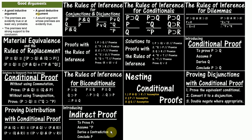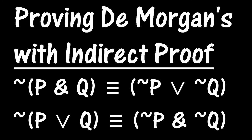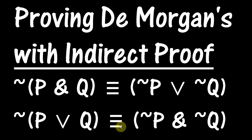And so we used indirect proof to prove a few more rules of replacement. Now we're at the last rule of replacement that we have to do a proof for — we've done proofs for all the previous rules of replacement, and De Morgan's is the only one left. So here we have the two forms of De Morgan's theorem. One says the negation of p and q is equivalent to not p or not q, and the other one says that neither p nor q is equivalent to not p and not q. We're going to do proofs of each of these.